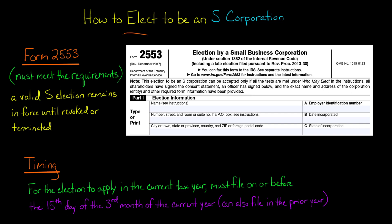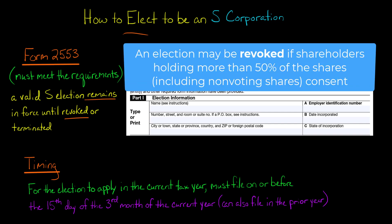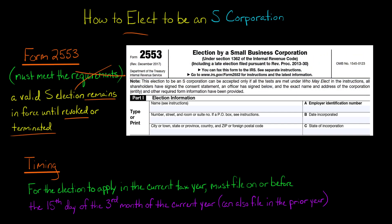That election is going to remain valid until it's either revoked — for example, if the shareholders later decide they no longer want to have an S-Corporation — or terminated — for example, if you fail to meet the requirements to be an S-Corporation at some point in the future.